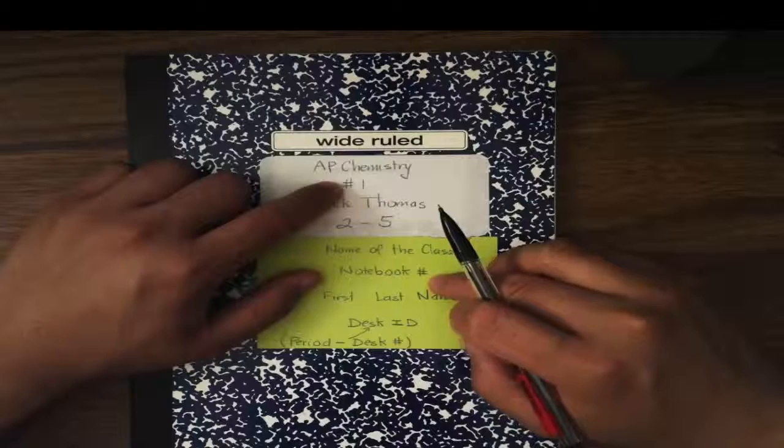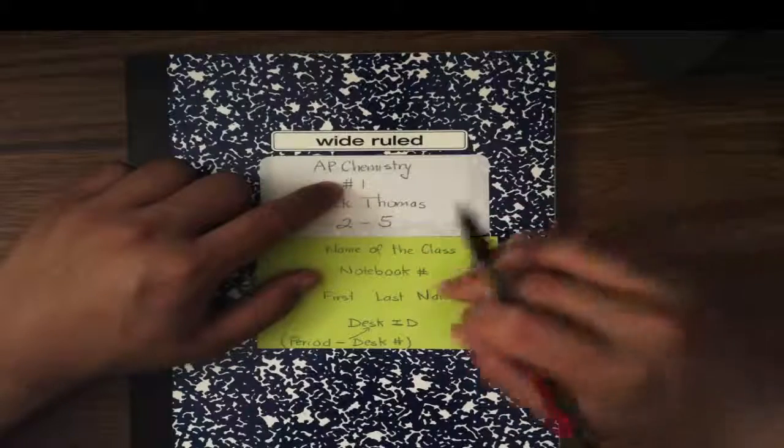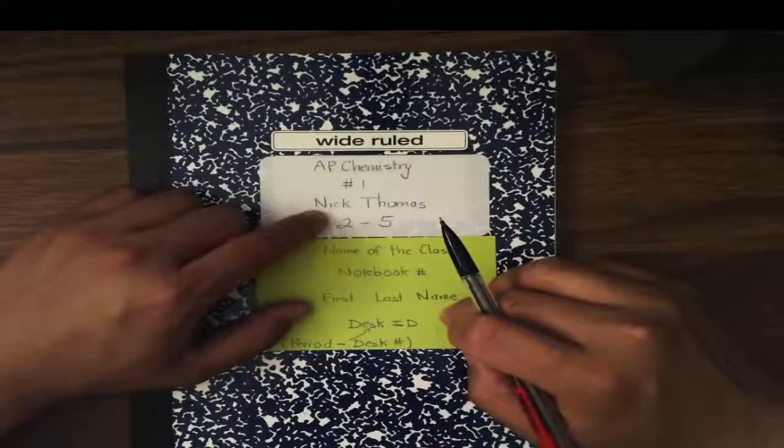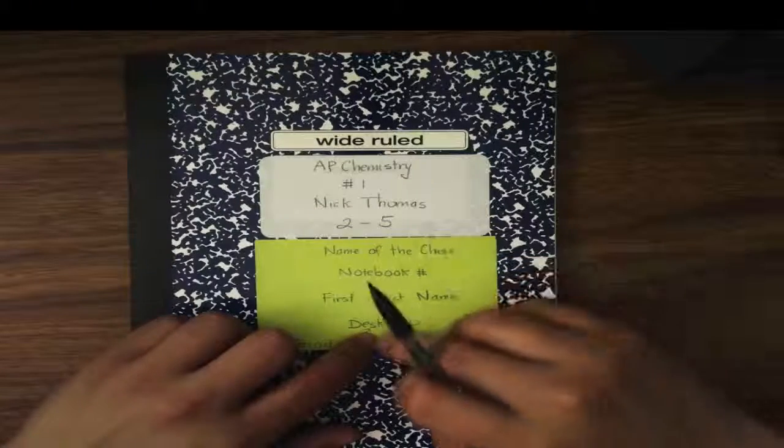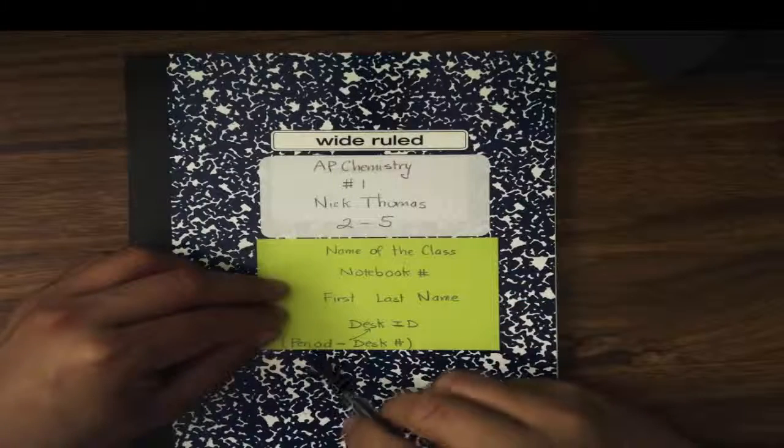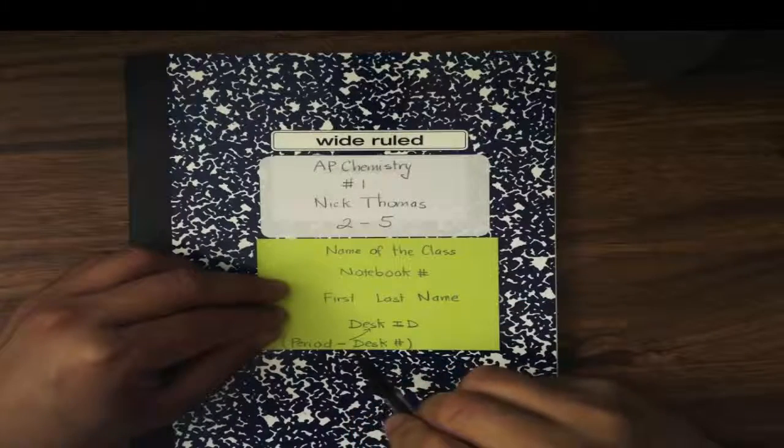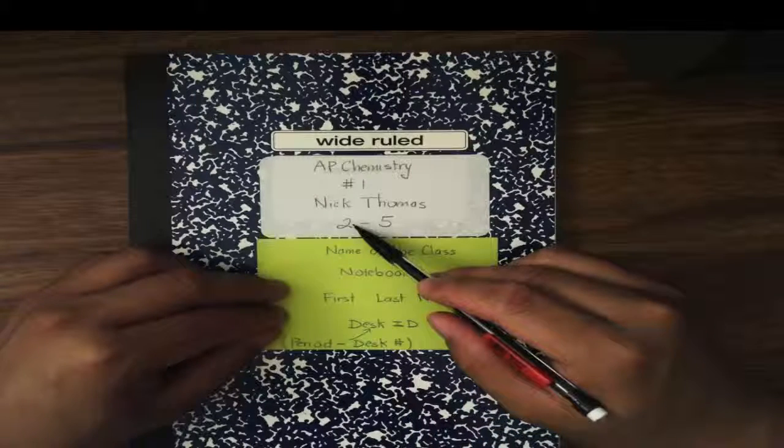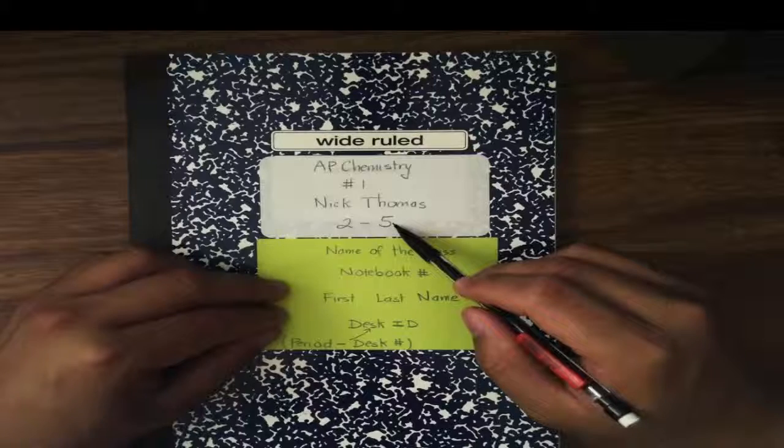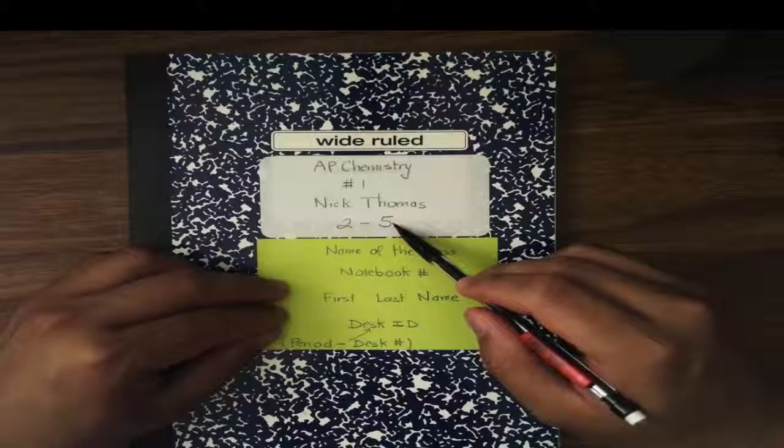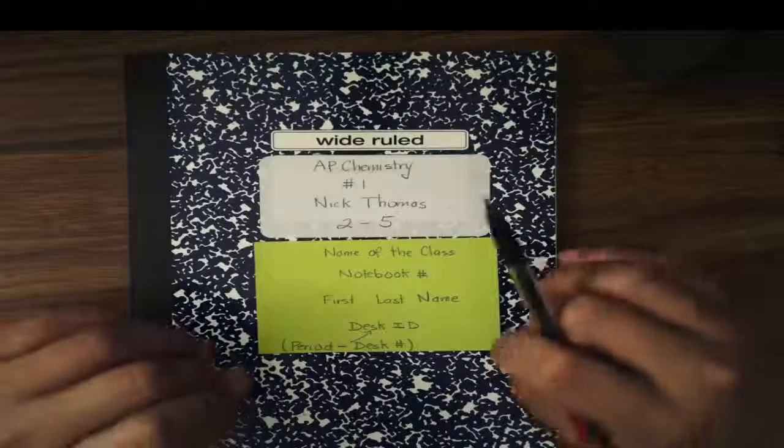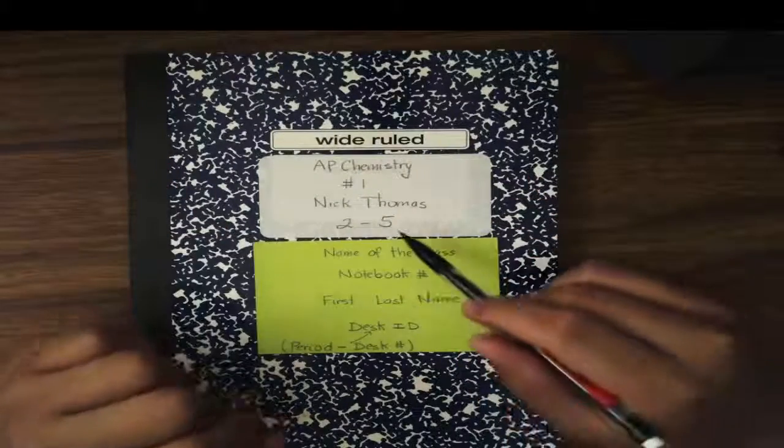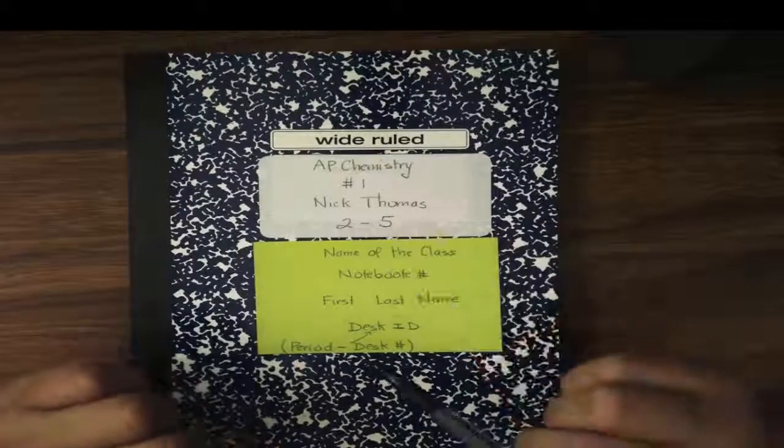Because later on, if we need another notebook, we call that notebook number 2. Then we have the first and last name of a particular student. But most importantly, it's the desk ID. This desk ID is based on the period number, hyphen, and desk number. For instance, this particular notebook belongs to 2nd Period, specifically the student who is sitting on desk 5 of 2nd Period. So if I ask a student to return this notebook to this particular student, all they have to do is go to 2nd Period, and that's number 5.